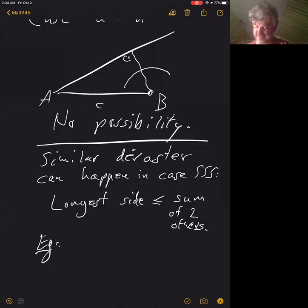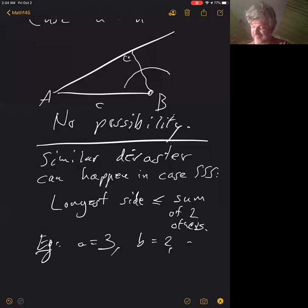One example: given a is 3, b is 2, c is 10 - that wouldn't work. But if we have the longest side less than the sum of the two shorter ones, then you can apply that same technique we did last time and actually figure out all three angles using the law of cosines.